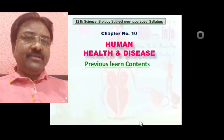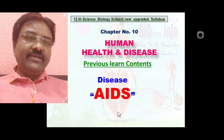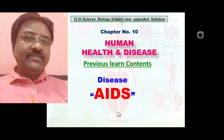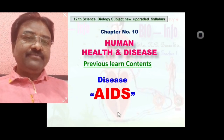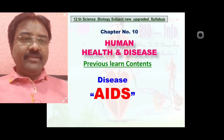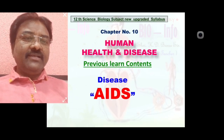In the previous lecture, we learned the human health and disease chapter. We discussed the disease AIDS in detail: what is AIDS, which pathogen causes AIDS, what is the structure of HIV, what are the symptoms of AIDS, what are the preventive measures, which diagnosis tests are used, and what is the treatment measure of AIDS.